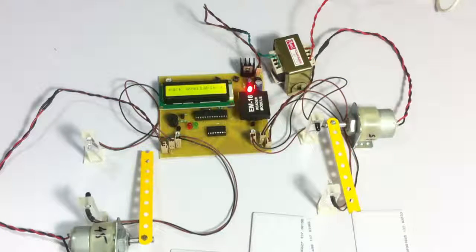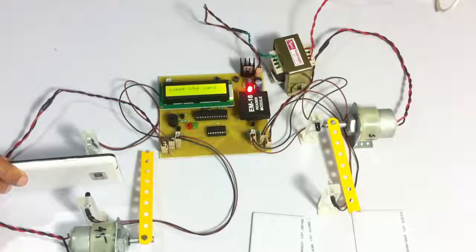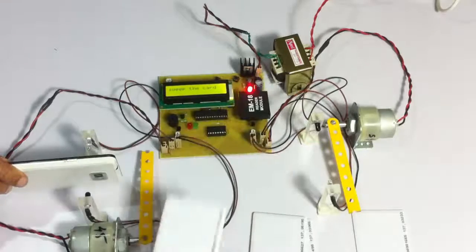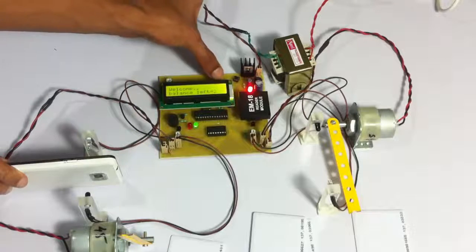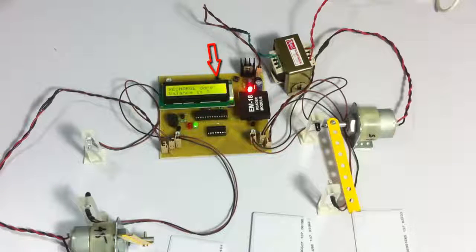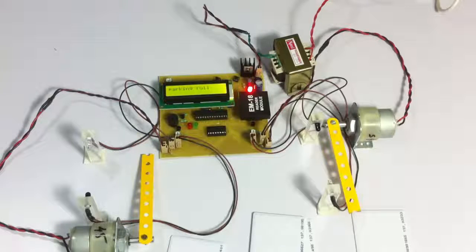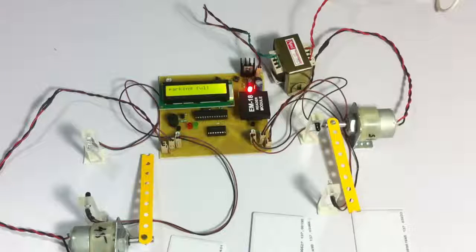So now when we press the recharge button on a particular entry, it recharges that particular amount. And as you can see, it showed a message on the LCD screen that the amount for that particular user was recharged to full, that is 5 units.